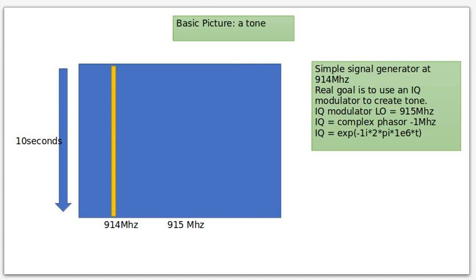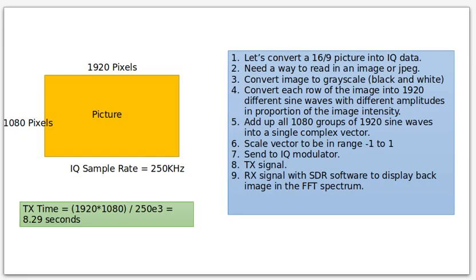And if you now wanted the tone to be 1 megahertz below, you would do this. You would make it a negative 1 megahertz phaser and if your LO is at 915, you would see this signal at 914. So far this has been a very, very boring picture.